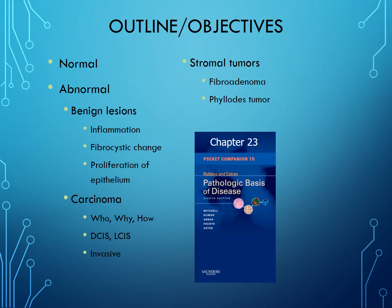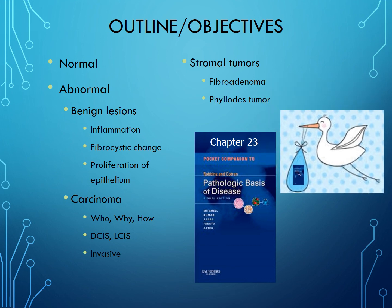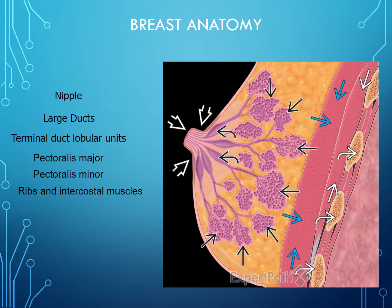This is our pathology book of choice for learning about basic breast pathology. Now if big Robbins is too much for you, you can also go ahead and look at baby Robbins, which is like big Robbins but just smaller. This is the normal breast anatomy. You can see here we have the nipple, and that leads to these large ducts, which eventually go into these terminal ductal lobular units. Around these terminal ductal lobular units you have fat, and resting beneath the fat are the pectoralis major and pectoralis minor muscles, as well as ribs and the intercostal muscles.